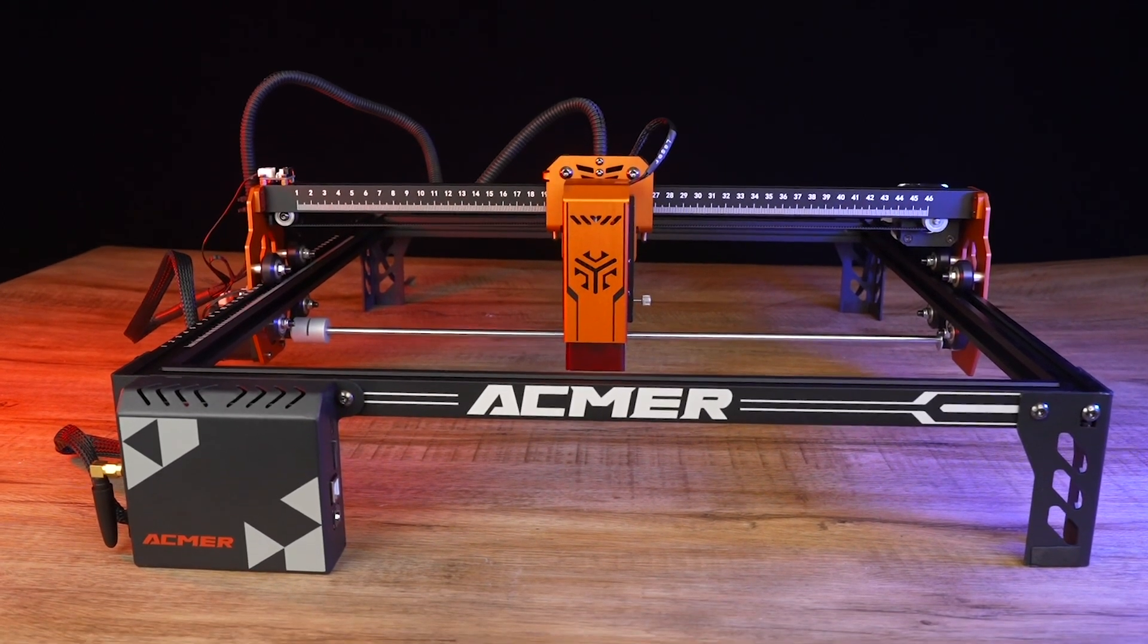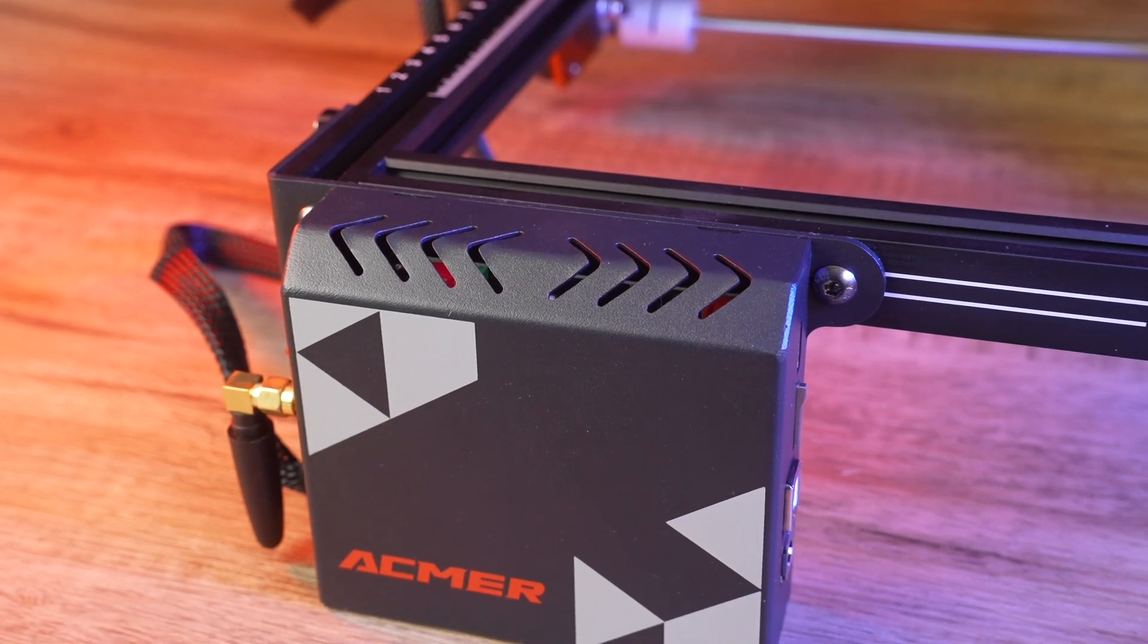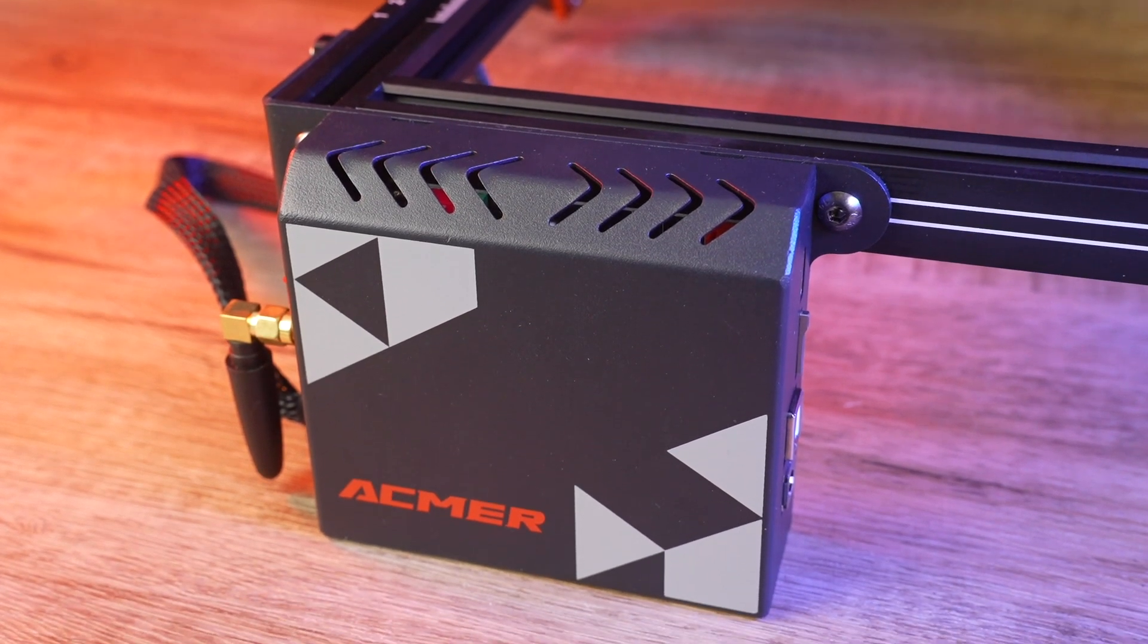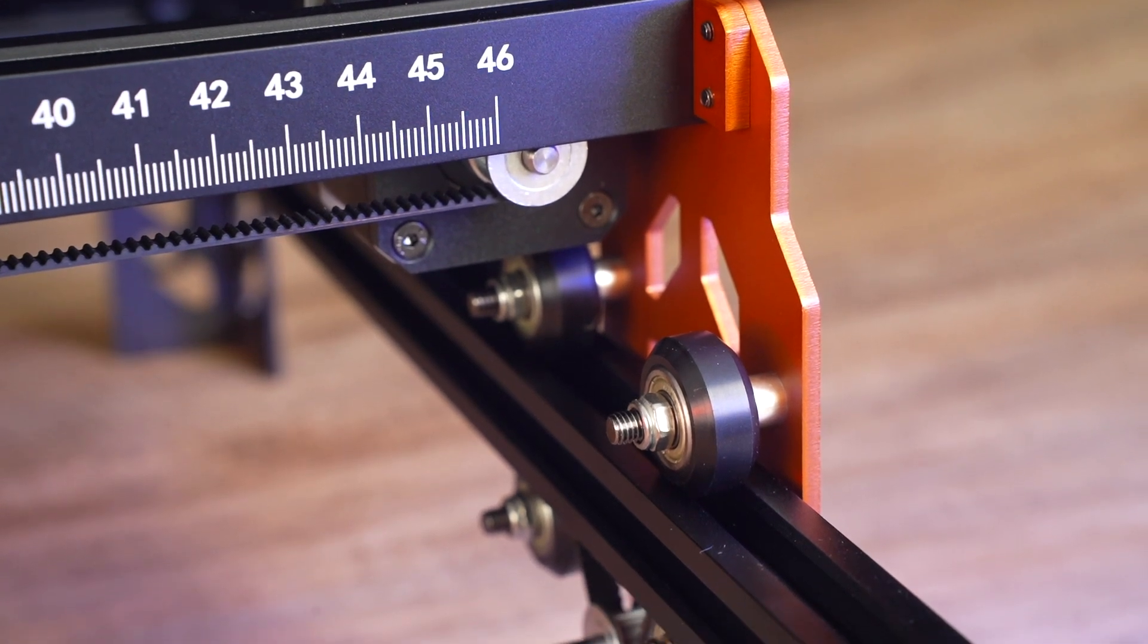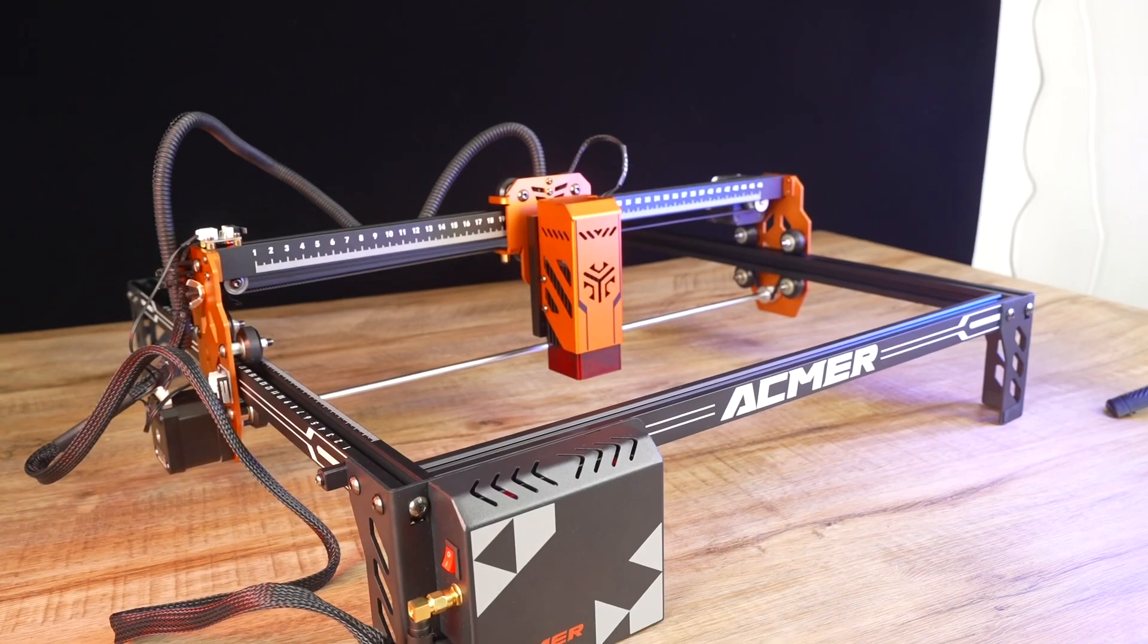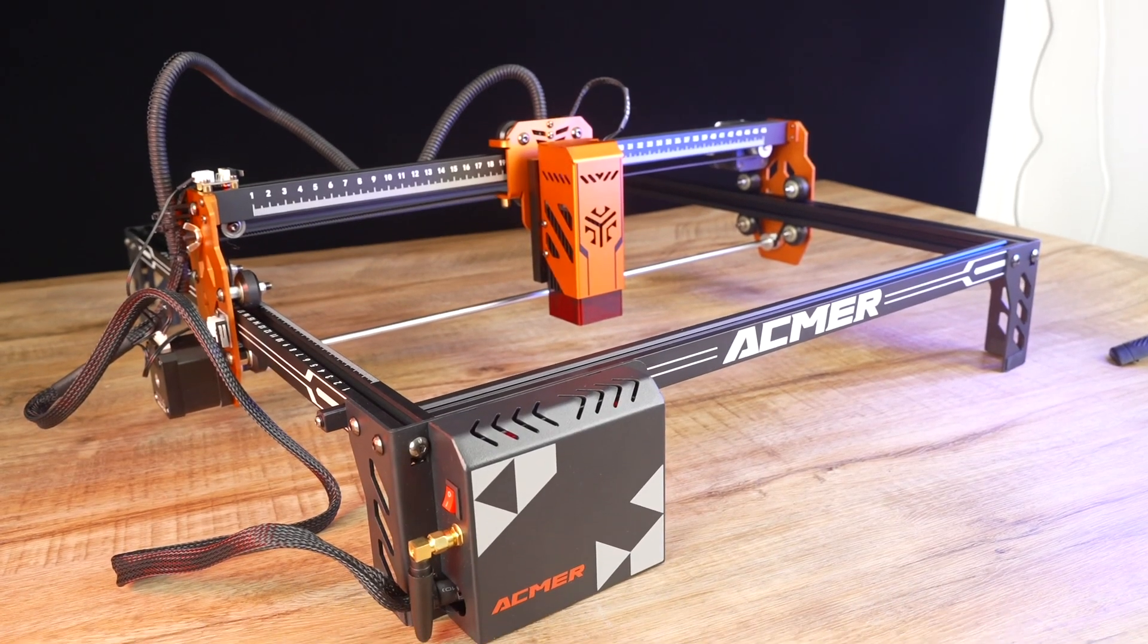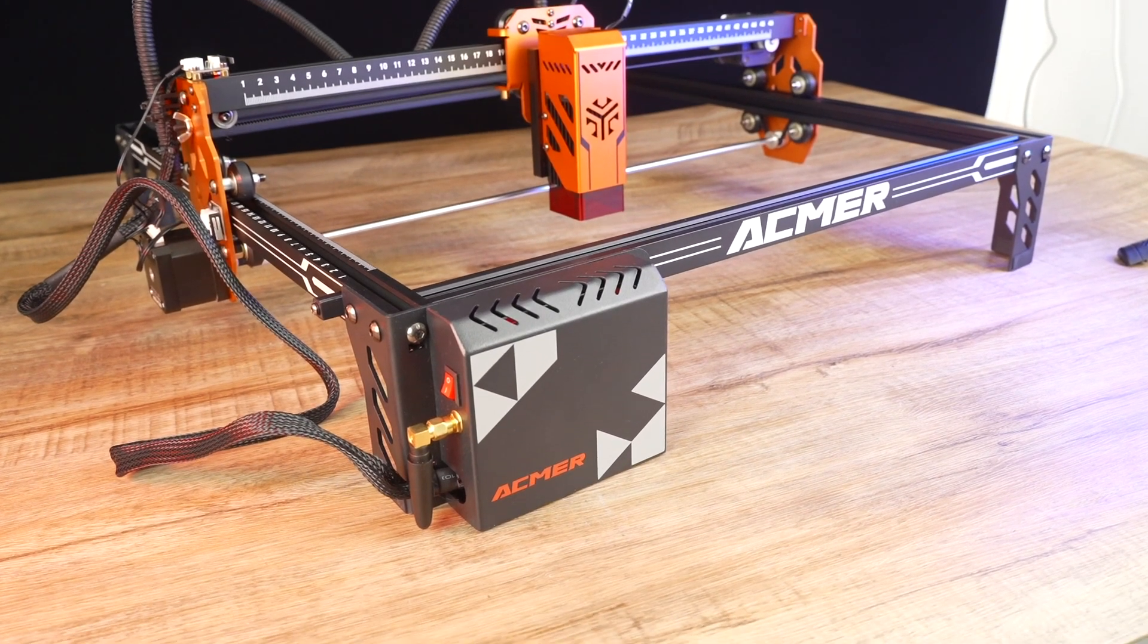This 6-Watt machine is specifically crafted for beginners in laser engraving and cutting. I'm particularly fond of the vibrant orange colour. However, it's worth noting that this entry-level laser engraver does not come equipped with air assist. The working area measures 380 by 370 millimeters, slightly smaller than its competitors.